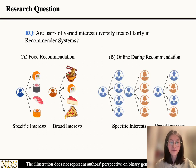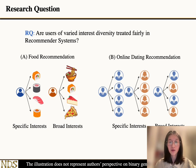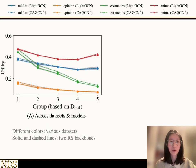Answering this question is important for various applications. For example, in food recommendation, users might have specific interests toward certain item categories, while some others have broader interests to try different food. Similar cases happen in online dating scenarios. For these users of varied interest diversity, they should be treated fairly in recommender systems, and we verify whether this expectation holds through empirical experiments.